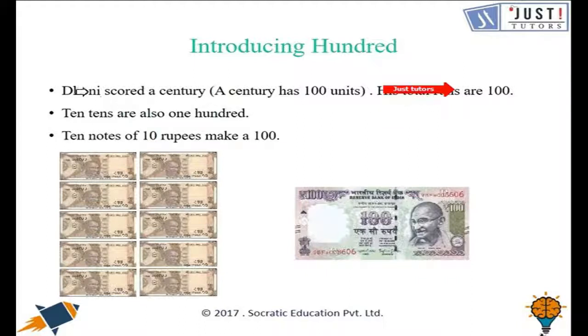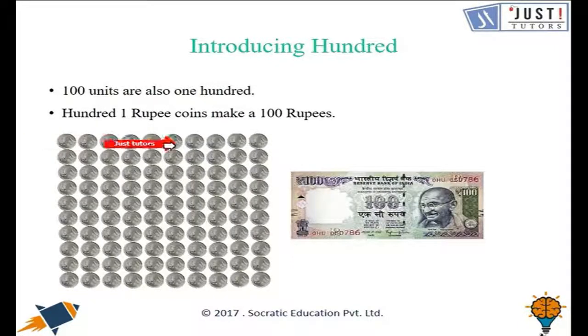A hundred consists of 10 tens. So if you have 10 ten-rupee notes, then you would have 100 in total. Similarly, if you have one hundred rupee note, then it is equal to 100 as 100 units is also 100.